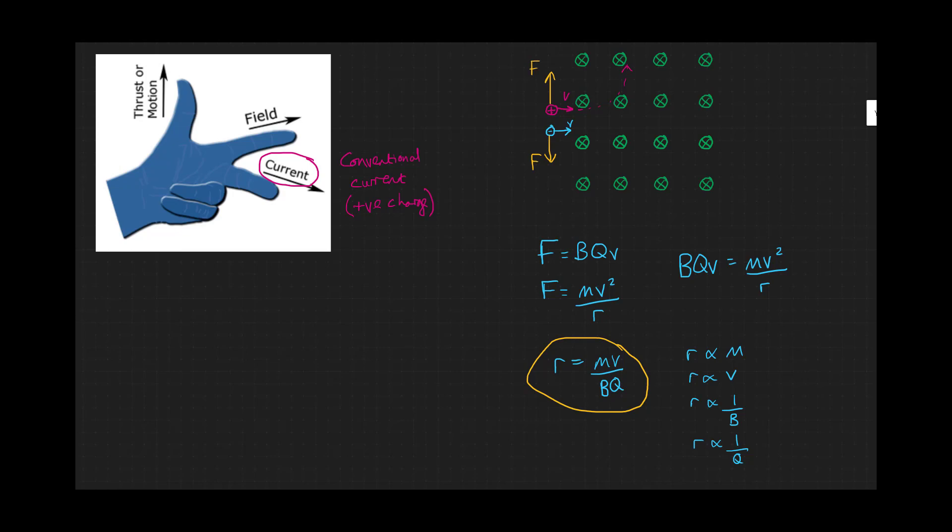Protons have a much larger mass than electrons, so they will therefore move in a much larger circle than the electrons.